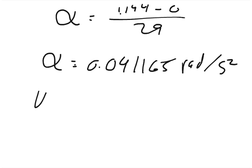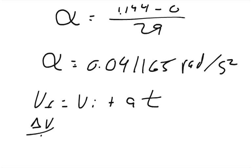In linear kinematics, the final velocity equals the initial velocity plus acceleration times time. This is derived from the definition that the change of velocity over time equals acceleration — you rearrange to get v_final minus v_initial, multiply time over, and add the initial velocity.